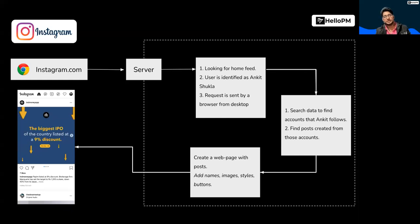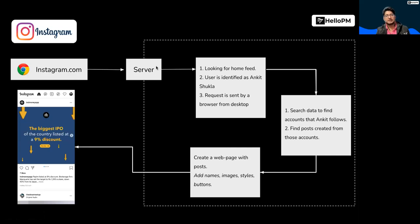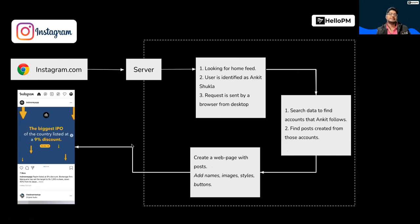The server is going to follow all of these steps, then send a webpage that the client — the browser — can understand. So what happened: I typed Instagram.com, it went via DNS to the server, the server received this information, understood the request, followed the business logic, collected that data, created a webpage, and that webpage was sent to the browser, which can show it to me. Tell me if you have understood how this basic system works.